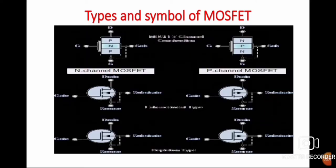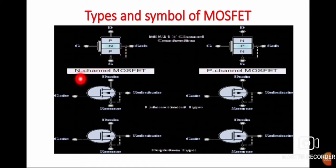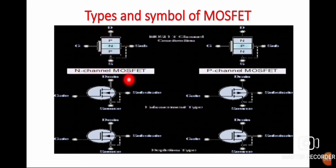Let us move towards the types and symbol of MOSFET. There are two types of MOSFET: N-channel MOSFET and P-channel MOSFET. The type of channel is determined by the doped material. If N-type material is used to form the channel sandwiched between two P-type materials, it is known as N-channel MOSFET. Similarly, if P-type material is used, it is known as P-channel MOSFET.